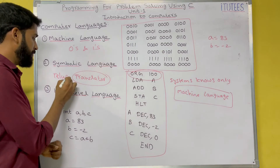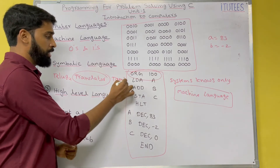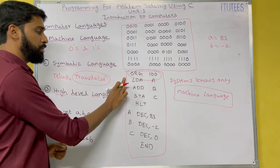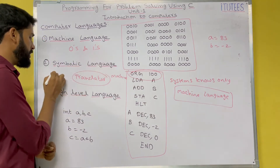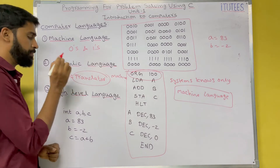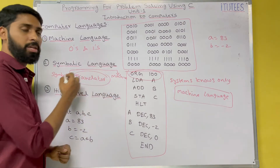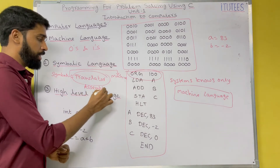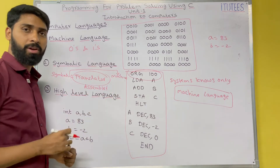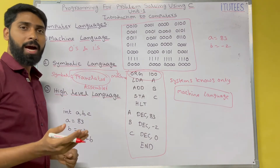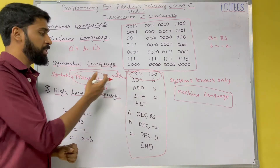I give the instructions in Telugu. This translator knows Telugu and Tamil, so it can translate the instructions into Tamil. Similarly, the system knows only machine language. In symbolic language, we give instructions in symbolic language, and this translator converts the symbolic instructions into machine instructions. This translator we call an assembler. The purpose of the assembler is to convert the assembly language instructions into machine level language instructions. We also call this symbolic language as assembly language.